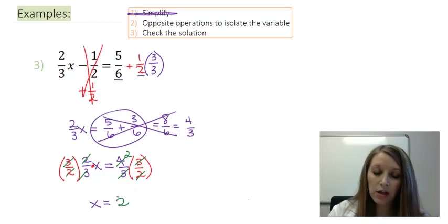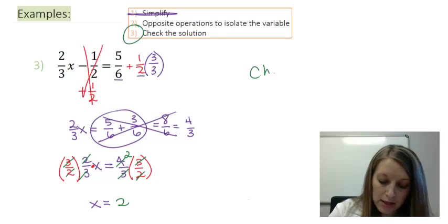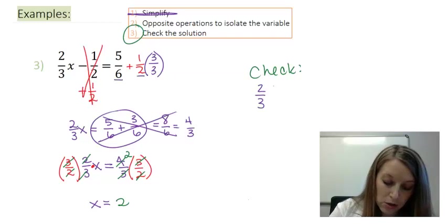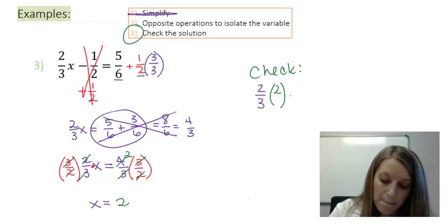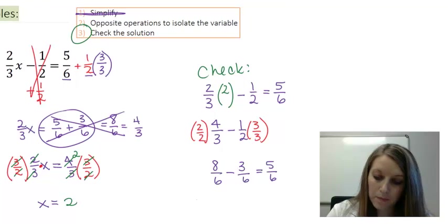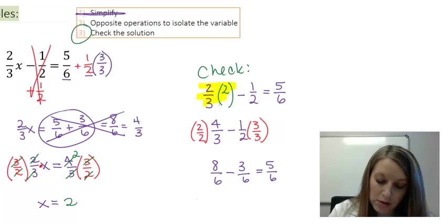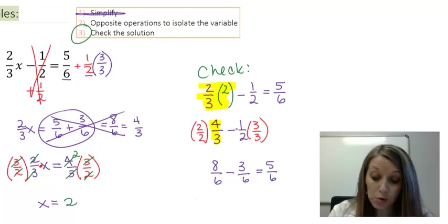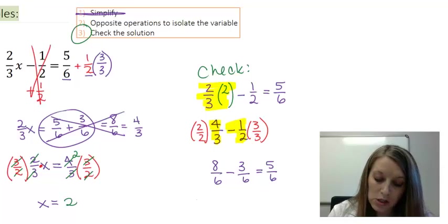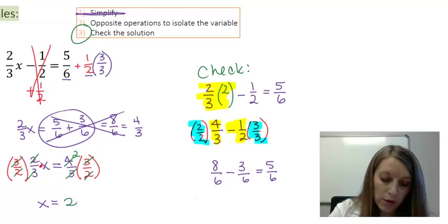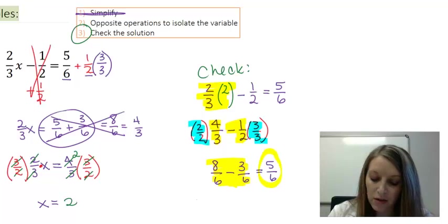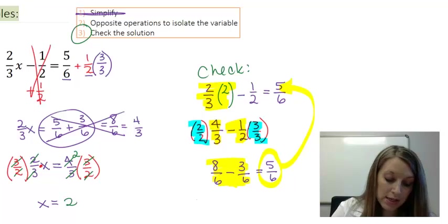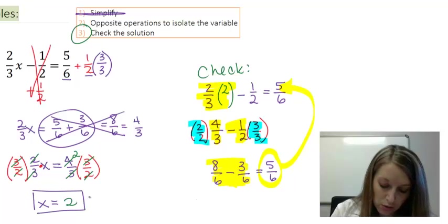Let me check this here by substituting 2 back in. I have 2 thirds times my solution of 2 minus 1 half is equal to 5 sixths. I multiplied my 2 thirds times 2 to give me 4 thirds. To subtract 1 half from that, I need a common denominator, so I multiplied by my missing pieces, which gives me 8 sixths minus 3 sixths, leaving me with my final answer of 5 sixths, which is what I was looking for. So that means I do have my correct solution to this problem.